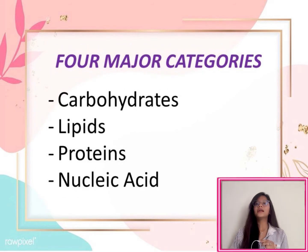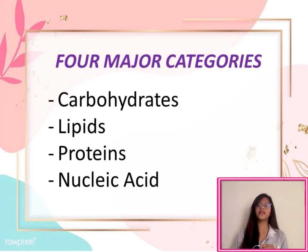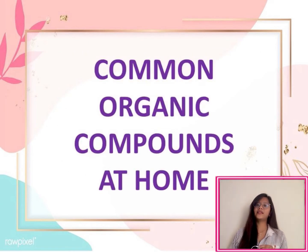There are four major categories of organic compounds that we can find in living things, and these are carbohydrates, lipids, proteins, and nucleic acid. And now we can proceed to our main topic, which is the common organic compounds at home.